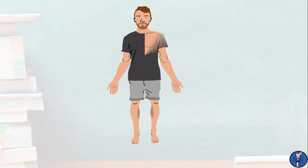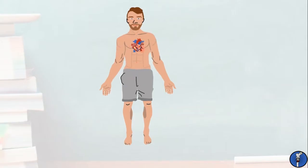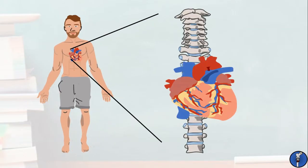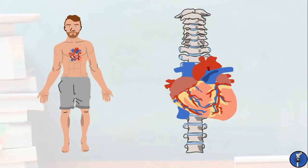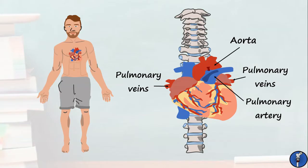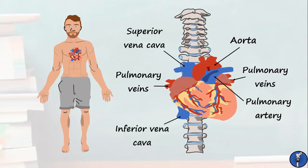The heart is the centre of our cardiovascular system, and all veins eventually drain back into its right atrium. Taking a closer look at the heart, we can see it sits just anterior to the T4-5 to T8-9 vertebral bodies. The main vessels leaving the heart are the aorta and the pulmonary artery. Draining into the heart are the pulmonary veins, which carry freshly oxygenated blood from the lungs, and the superior and inferior vena cavae, which bring deoxygenated blood back from the rest of the body.